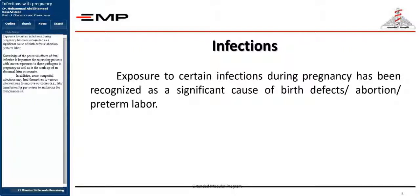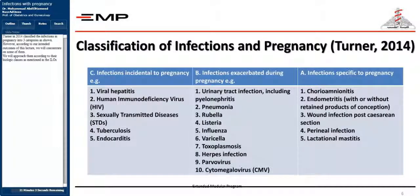In addition, some congenital infections may lend themselves to various interventions to improve outcomes — for example, fetal transfusion for parvovirus, or antibiotics for toxoplasmosis. Turner in 2014 classified the infections in pregnancy into three categories. According to the intended outcomes of this lecture, we will concentrate on some of them, approaching them according to their biological classes as mentioned in the ILOs.